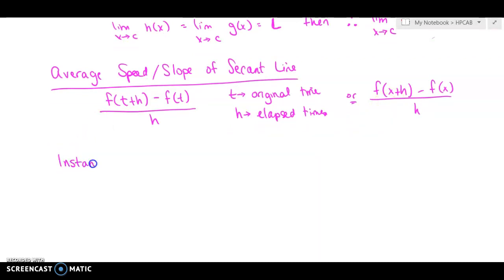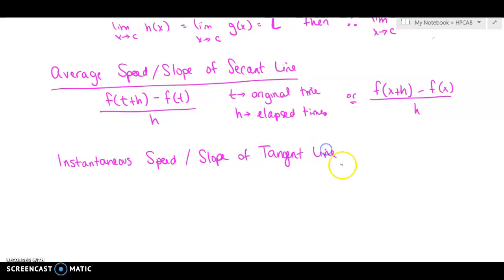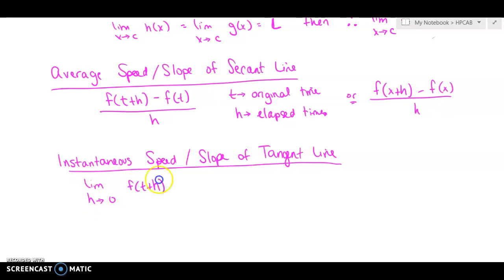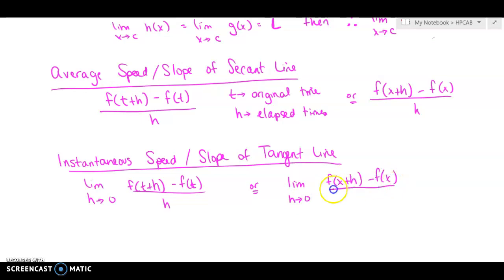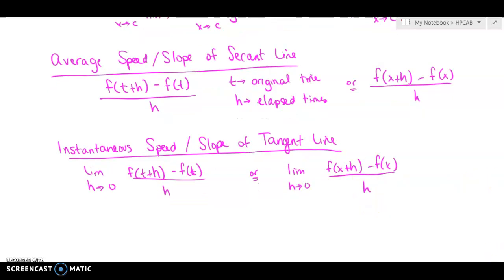Instantaneous speed slash the slope of a tangent line — remember, a secant line intersects the curve in two locations while a tangent only intersects it in one. For this one you do have to do the limit as H approaches 0 of f(T+H) minus f(T) all over H. Or if we're talking about a tangent line with no time, it would be the limit as H approaches 0 of f(x+H) minus f(x) all over H.